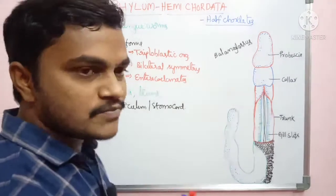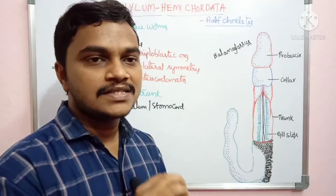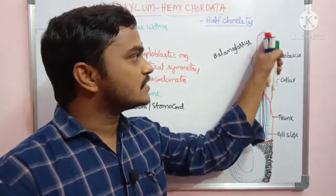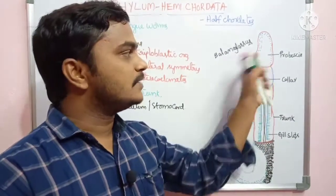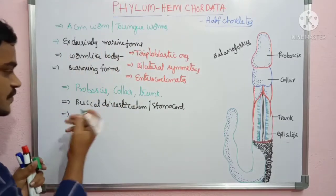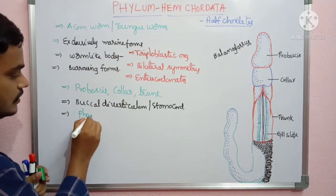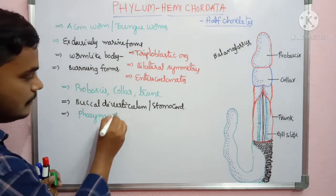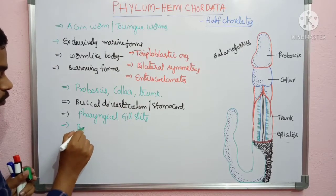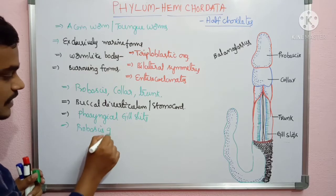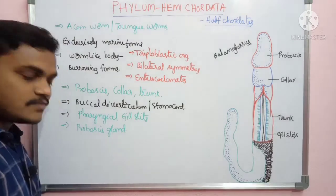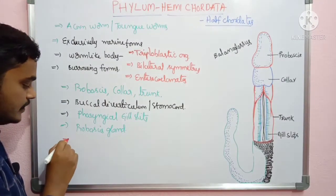Hemichordates are burrowing and tube-dwelling forms. The proboscis contains mucin glands, and mucin substance is secreted out. The proboscis is also useful for making burrows in the sediment. The respiratory system is maintained by pharyngeal gill slits. Excretion is conducted by the proboscis gland.